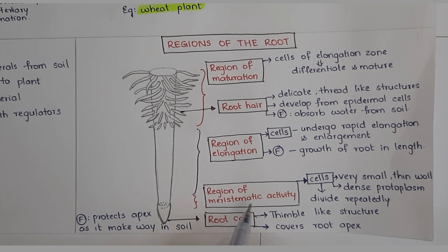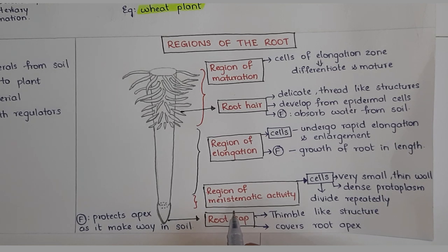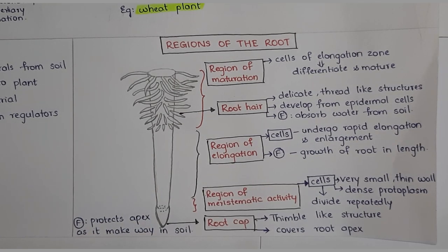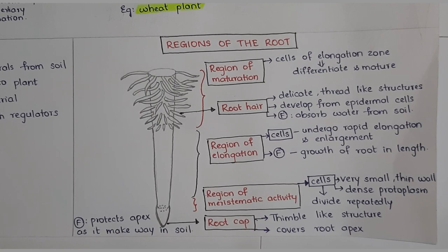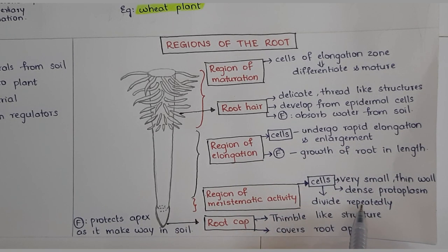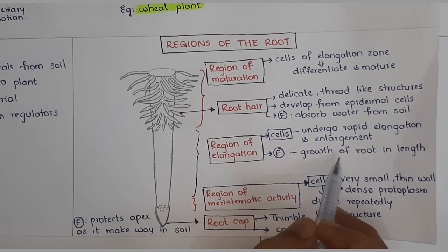Next is the region of meristematic activity, present a few millimeters above the root cap. Meristematic activity means the cells divide rapidly. The cells in this region are very small, thin-walled, and have very dense protoplasm. Next is the region of elongation — the cells in this region undergo rapid elongation and enlargement. The divided cells elongate and enlarge, and the function of this region is growth of the root in length.